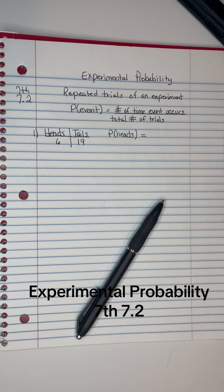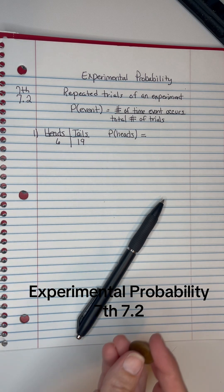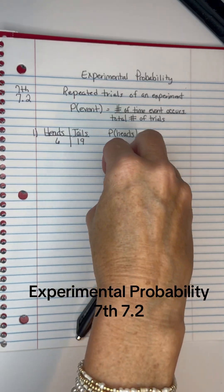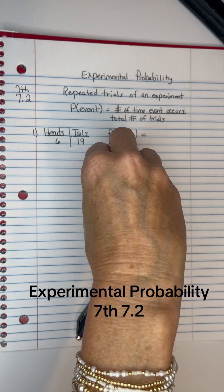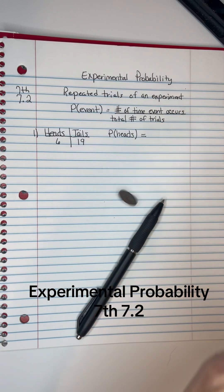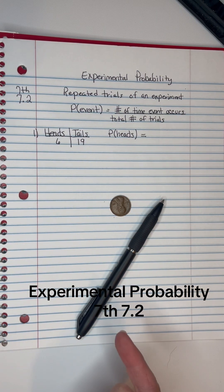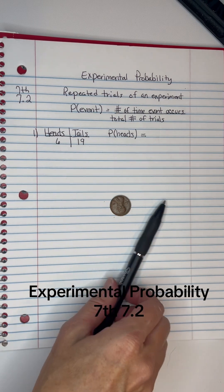We're going to talk about experimental probability, and that is actually doing some type of event, such as spinning a penny. So if I spin a penny and do that a whole bunch of times, that would be called experimental probability.